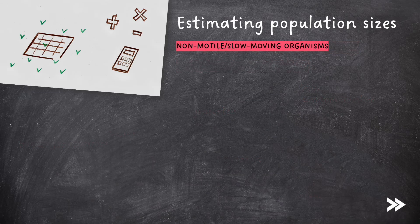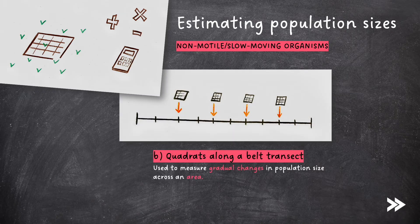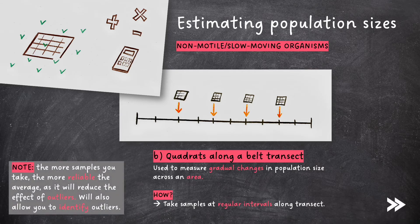For non-motile or slow-moving organisms, we could also use quadrats along a belt transect. Belt transects are used to measure gradual changes in population size across an area, with samples taken at regular intervals along the transect. Note that for both quadrat methods, the more samples you take, the more reliable the average, as it reduces the effect of outliers and also allows you to identify outliers.